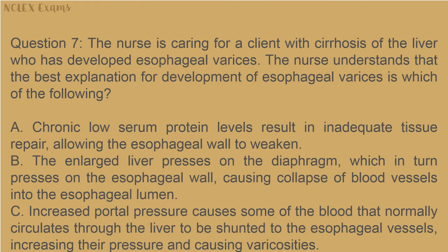Question 7: The nurse is caring for a client with cirrhosis of the liver who has developed esophageal varices. The nurse understands that the best explanation for development of esophageal varices is: A) chronic low serum protein levels result in inadequate tissue repair, allowing the esophageal wall to weaken; B) the enlarged liver presses on the diaphragm which presses on the esophageal wall, causing collapse of blood vessels into the esophageal lumen; C) increased portal pressure causes some blood that normally circulates through the liver to be shunted to the esophageal vessels, increasing their pressure and causing varicosities; D) the enlarged liver displaces the esophagus toward the left, tearing the muscle layer of esophageal blood vessels, which allows small aneurysms to form along the lower esophageal vessels.